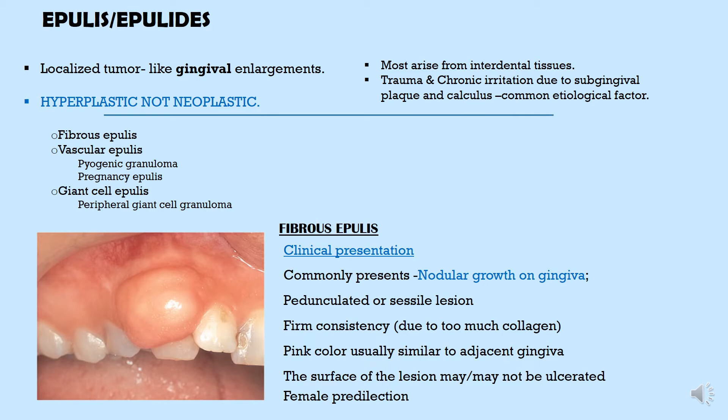Let's look at epulis or epulites. These are localized tumor-like gingival enlargements that mostly arise from interdental tissue. The etiology is trauma and chronic irritation due to subgingival plaque and calculus, and they are hyperplastic, not neoplastic.